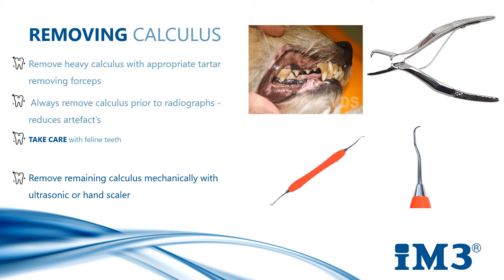Always remove calculus prior to doing any imaging or x-rays, because this will reduce artifacts on the image. We need to take special care with feline teeth to avoid causing fractures when removing calculus. After removing heavy matter, we can then remove remaining calculus mechanically with an ultrasonic scaler, or a combination of ultrasonic and hand scaling. We have a nice ergo-universal scaler, which is the perfect hand instrument for removing any remaining calculus from the tooth surface.